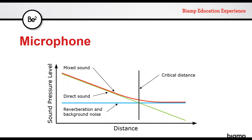Critical distance is how far I can get from the microphone before the mixed sound outweighs the direct sound. When the reverberant field dominates, you start to hear complaints that the room sounds hollow, echoey, or like you're in a bathroom. The critical distance will tell us what our microphone performance is going to be based on the room, and it will influence our microphone choices as well.